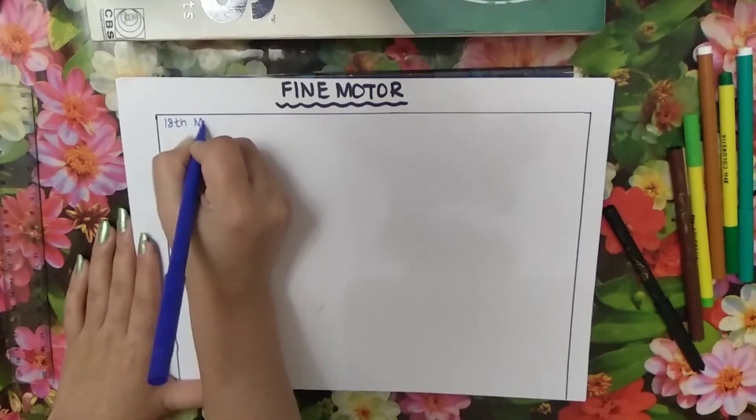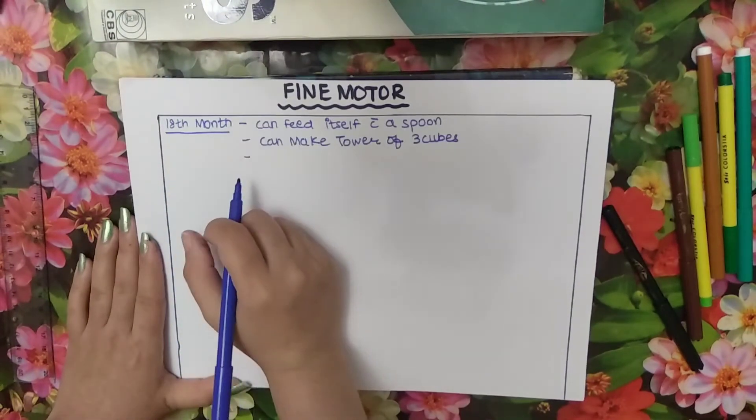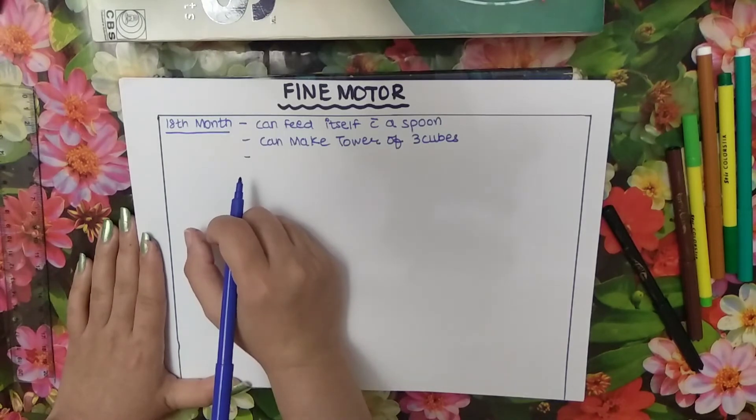18th month baby can feed itself with a spoon, can make towers of three cubes.